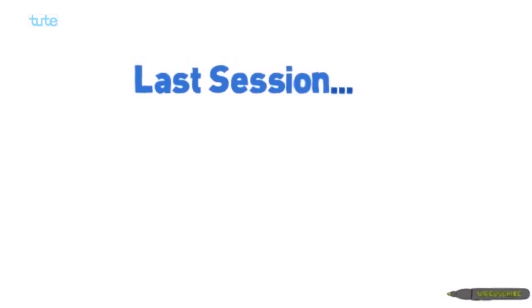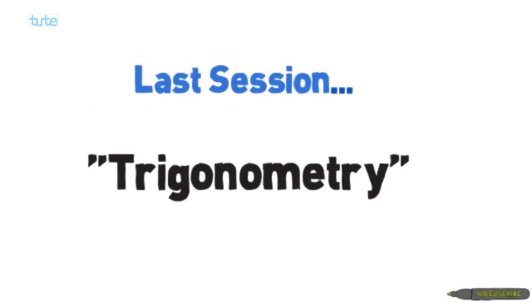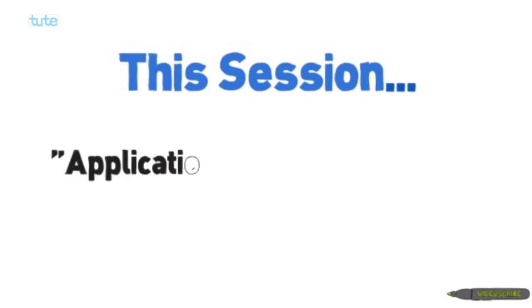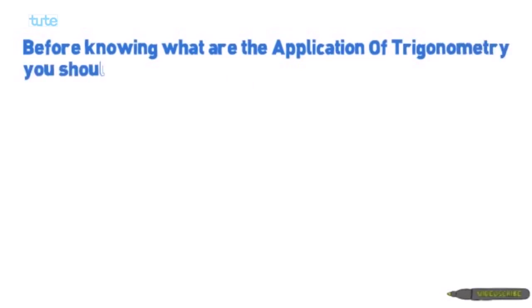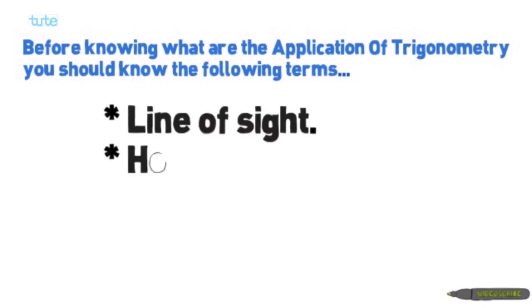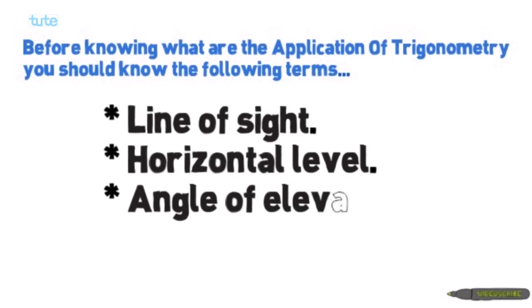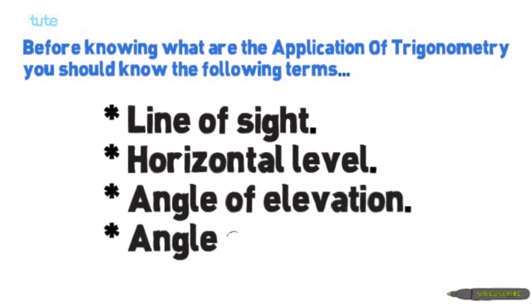Welcome to the tutorial. In the last session we studied trigonometry; in this session we will study the application of trigonometry. Before knowing the applications, you should know the following terms: first, line of sight; second, horizontal level; third, angle of elevation; and fourth, angle of depression. Let's see what each of these means.